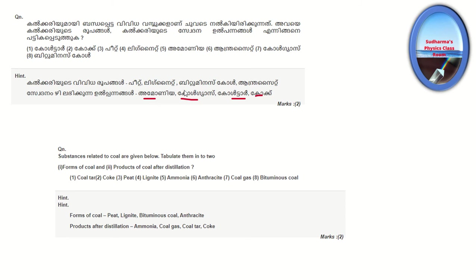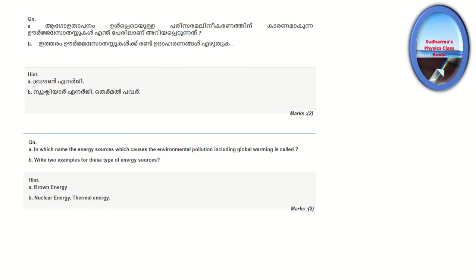Forms of coal are peat, lignite, bituminous, and anthracite. Products of coal after distillation include coal tar, coal gas, and ammonia.